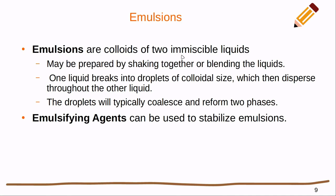Emulsions are colloids of two immiscible liquids. For instance, salad dressing — you shake it up until it appears as a single liquid, but it will settle out eventually. Sometimes you can get store-bought dressings that won't actually settle out, and that's a stable colloid. Emulsions can be prepared by shaking or blending liquids, causing one liquid to break up and disperse through another, though sometimes those droplets will coalesce and reform two phases.